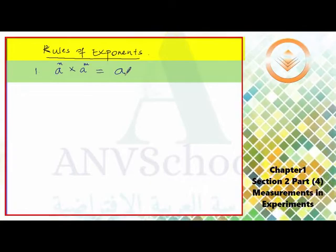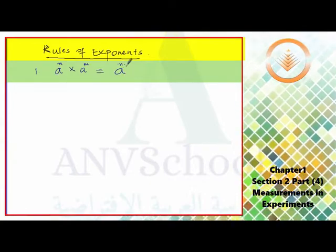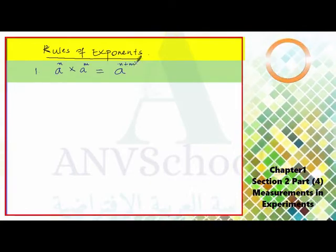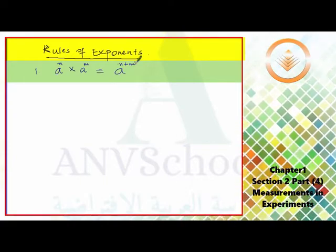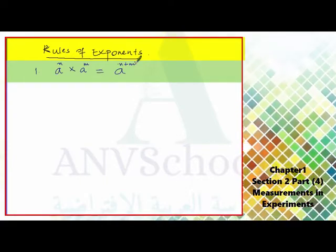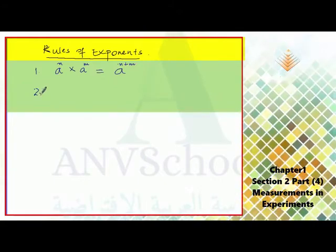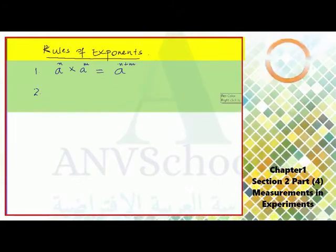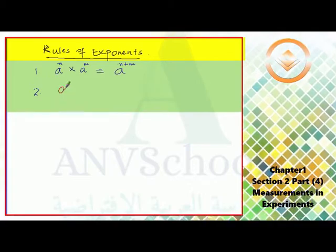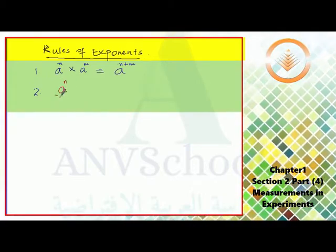The second rule is: if you have a raised to n divided by a raised to m, this can be written as a with the difference of the two exponents, n minus m.